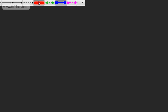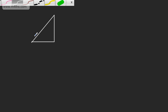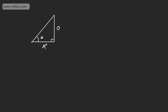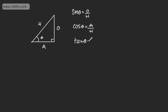To begin with, I just want to define the three major trig functions: sin theta, cos theta, and tan theta. I'm going to draw a quick sketch of a right-angle triangle. This angle right here is going to be theta. Relative to the angle, this is the opposite, this is the adjacent, and this is the hypotenuse. We can define sine theta to be the opposite over the hypotenuse, cos theta to be the adjacent over the hypotenuse, and tan theta to be the opposite over the adjacent. I think it's more intuitive to stick with this basic right-angle triangle.